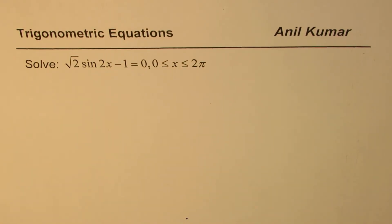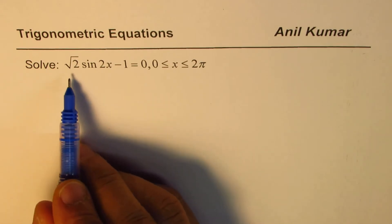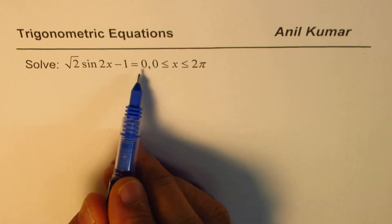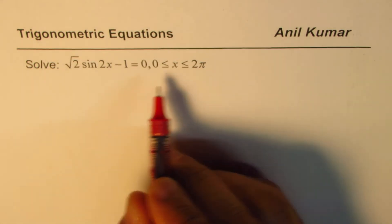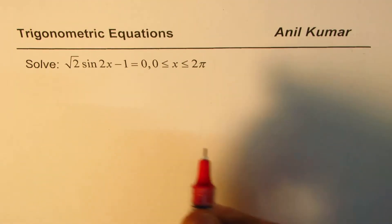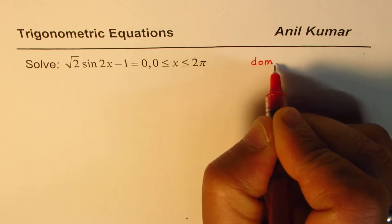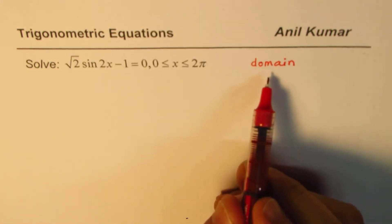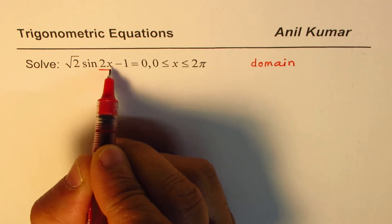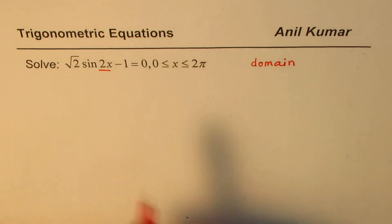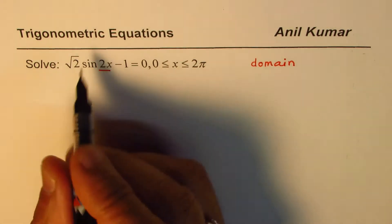I'm Anil Kumar. In this series we have taken up trigonometric equations and we'll see how to solve them. The question here is: solve √2 sin(2x) − 1 = 0, where x is between 0 to 2π. In this particular example, the critical thing we will understand is the domain itself — specifically how the domain changes when the argument is not just x but a multiple of x.